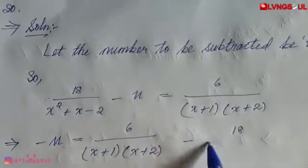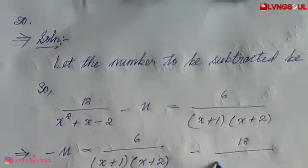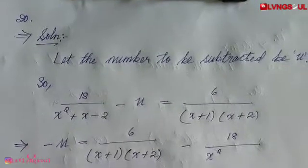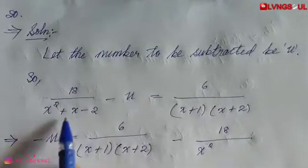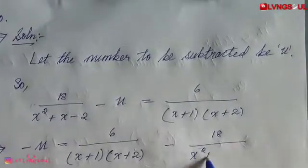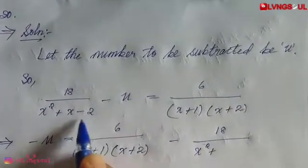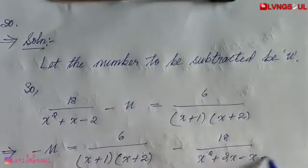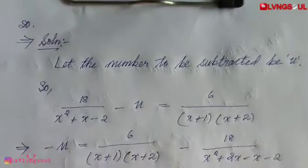We have 18 by x squared. Now we split the middle term of x squared plus x minus 2: x squared plus 2x minus x minus 2, giving us x plus 2 into x minus 1.